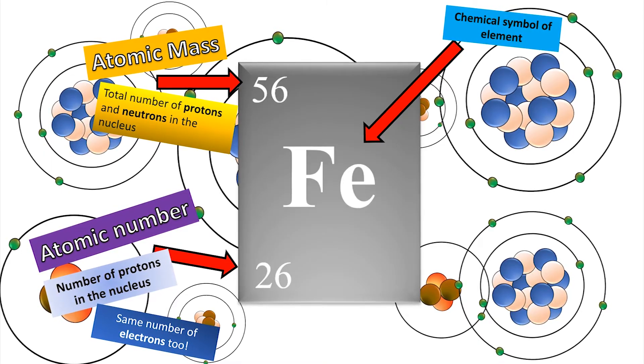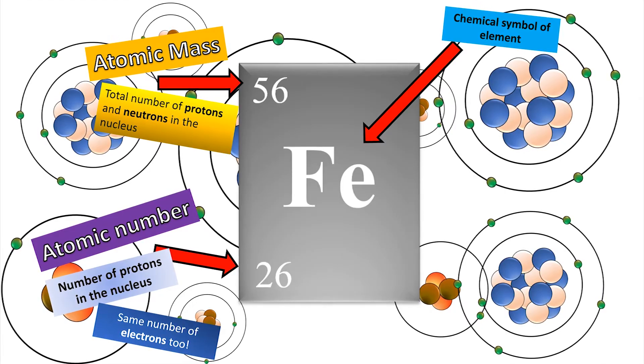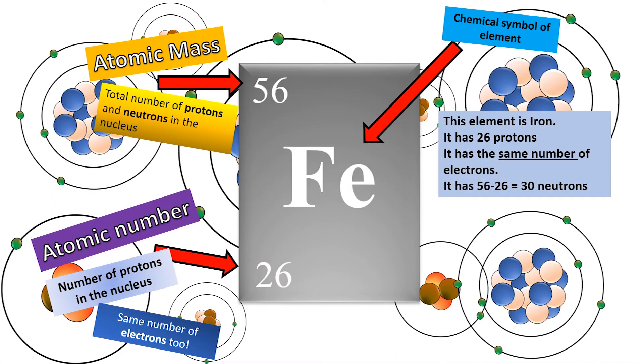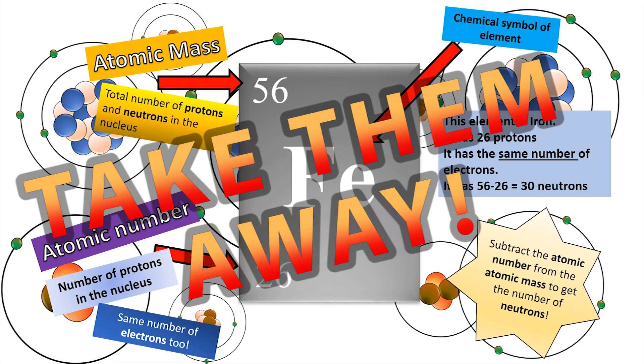So how can I work out how many neutrons there are? How many protons there are? And it must have the same amount of electrons. How many neutrons? Anybody know? That's right. We take those two numbers away from each other. So in this case, 56 minus 26 means there will be 30 neutrons in that particular nucleus. Just take the numbers away. That's the easiest way to remember it.